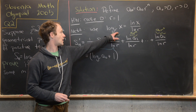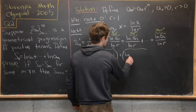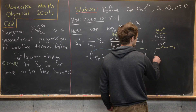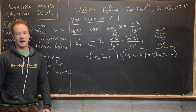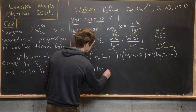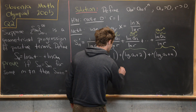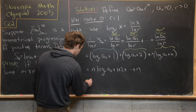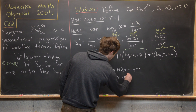Combining like terms, we get n times log_r(a₀) plus the sum 1 + 2 + ... + n. That sum is the well-known triangular number, so we can rewrite this as n·log_r(a₀) plus n(n+1)/2.